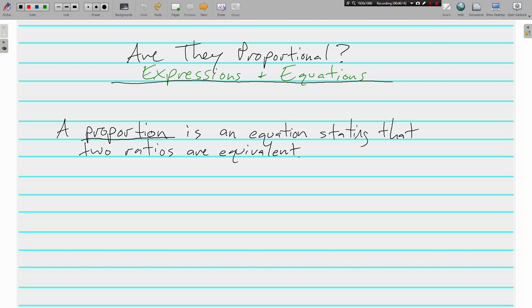Before we do that, let's make sure we understand what a proportion is. A proportion is an equation stating that two ratios are equivalent. So an example of a proportion would be that one-half is equivalent to two-fourths. This is a proportion because both of these ratios are equivalent.